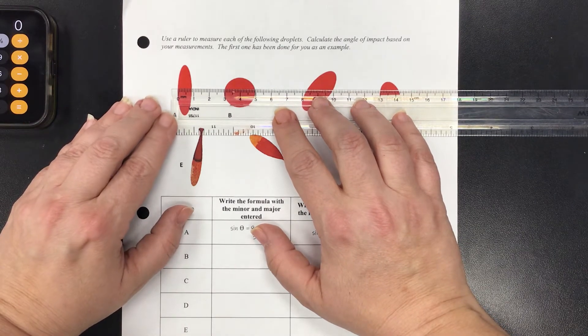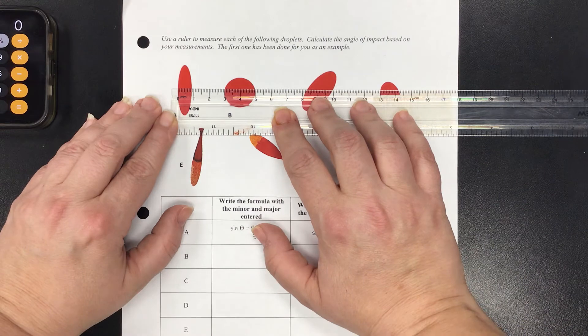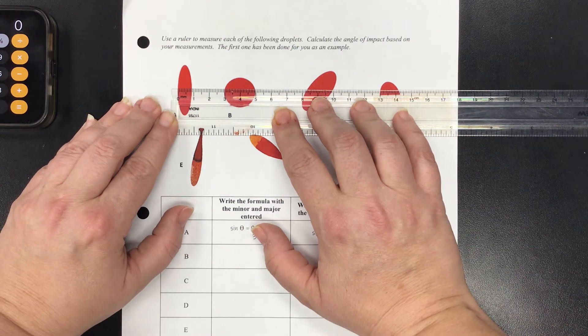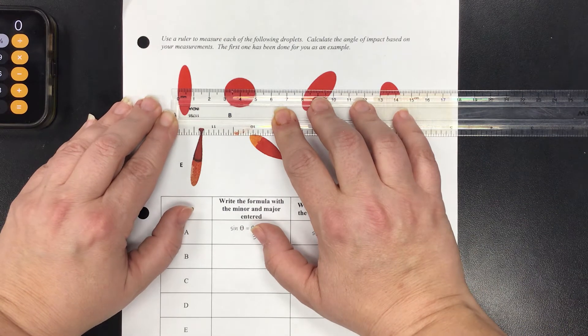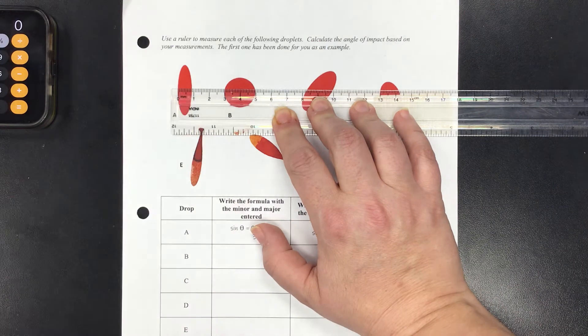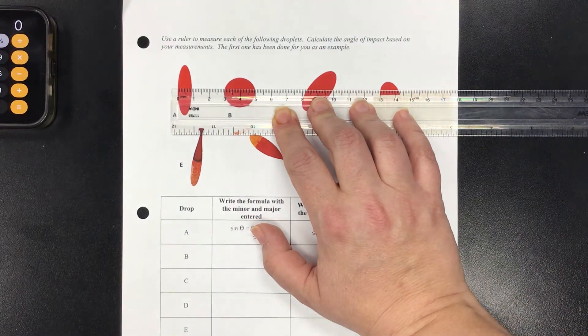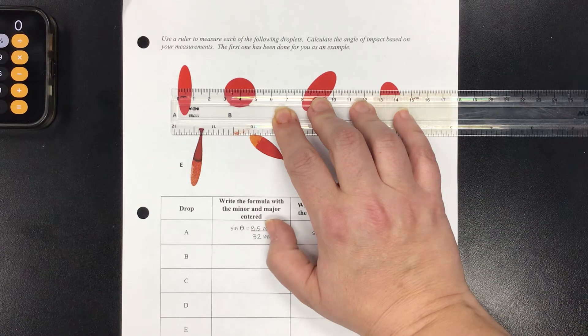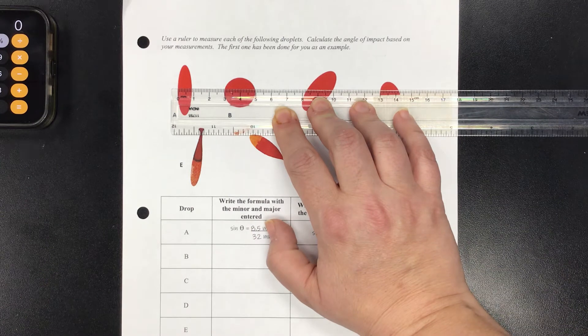So the part of the blood drop that is the widest - if I measure across here I'm looking at about eight and a half millimeters. So my minor is going to be about eight and a half millimeters. If I turn my paper and I measure from the end...